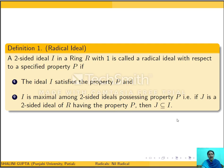A two-sided ideal I in a ring R with one is called a Radical Ideal with respect to a specified property P if I satisfies property P and I is maximal among all two-sided ideals satisfying property P. That is, if J is any other two-sided ideal of ring R having property P, then J is contained in I — maximal in this sense.